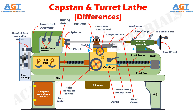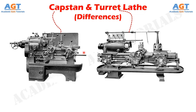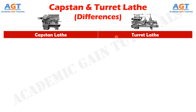There are certain difficulties that cannot be overcome by center lathes, such as the large time involvement while setting and movement of the tool between the machining processes, being unsuitable for mass production, having less number of speeds, and only one tool fixation in the tailstock. Thus the center lathe is modified to turret and capstan lathe to overcome all these difficulties.